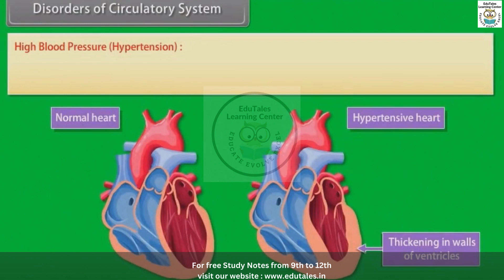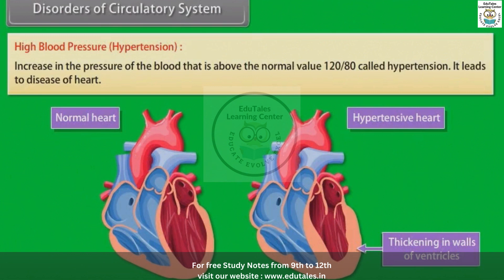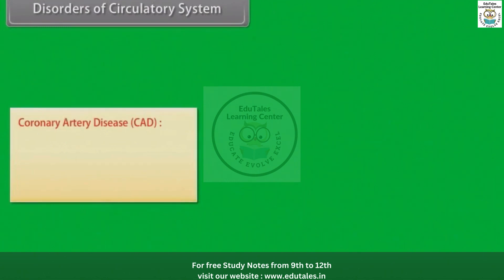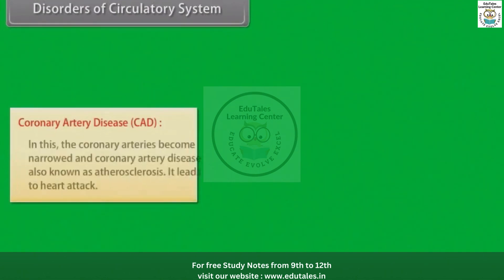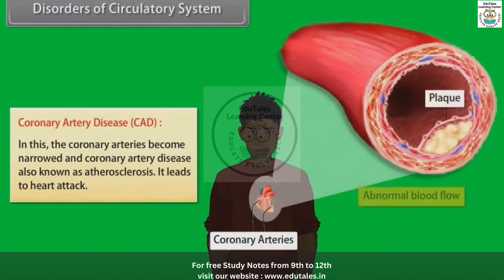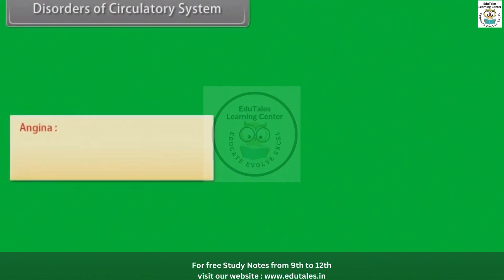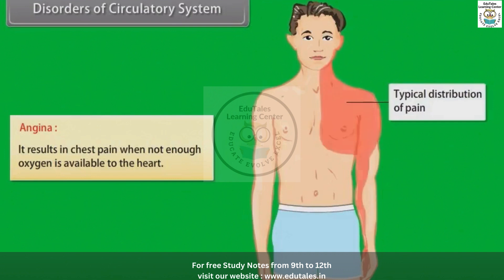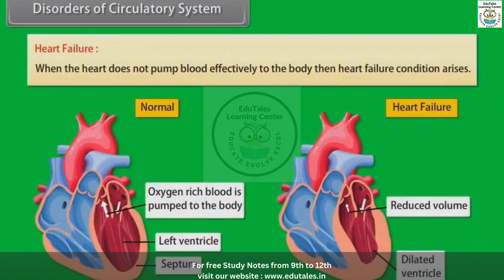Disorders of the circulatory system include: hypertension, which is an increase in blood pressure above the normal value of 120/80, and leads to heart disease; coronary artery disease (CAD), in which the coronary arteries become narrowed — also known as atherosclerosis — leading to heart attack; angina, which results in chest pain when not enough oxygen is available to the heart; and heart failure, which arises when the heart does not pump blood effectively to the body.